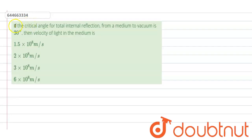Hello students, so the question is if the critical angle for total internal reflection from a medium to vacuum is 30 degrees, then the velocity of light in the medium is?